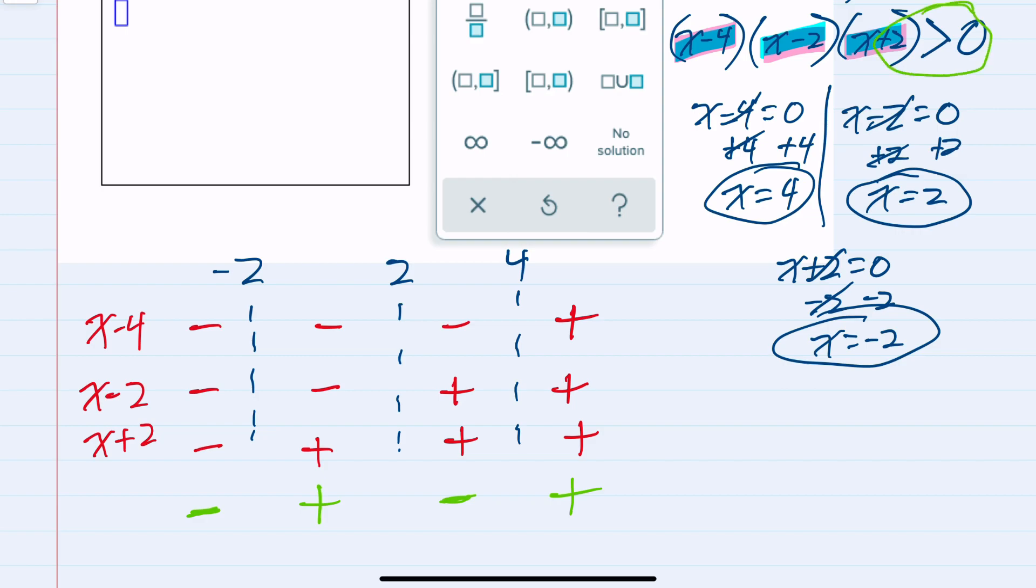For this example, I'm looking for where the product on the left-hand side is greater than 0. So where it is positive, it is positive here and here. We're not looking for equal to 0. So I'm going to write each one of these areas without including the endpoints. We first have negative 2 to 2, not including those values.